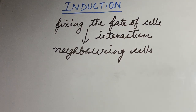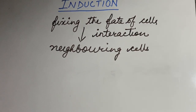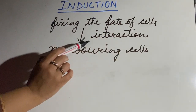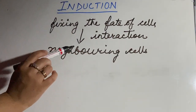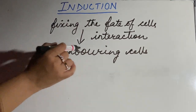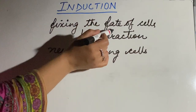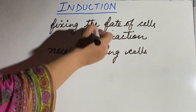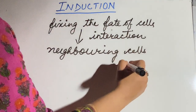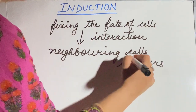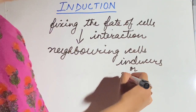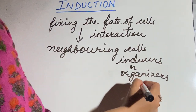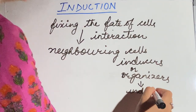Hello students. Today our topic of discussion is induction. Induction is a process of fixing the fate of cells by interaction with the neighboring cells. The neighboring cells determine the fate of cells which will be developed. The neighboring tissues which induce are known as inducers and they are also known as organizers. They induce by releasing some chemicals, which are known as inductors.